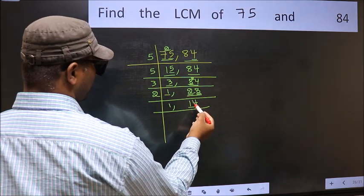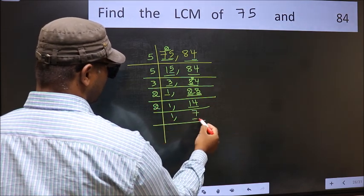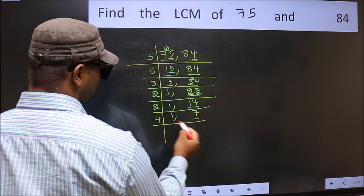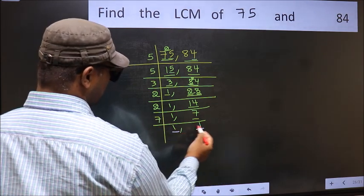Now here we have 14, which is 2 times 7. Now we have 7. 7 is a prime number, so 7 once 7. So we got 1 in both the places.